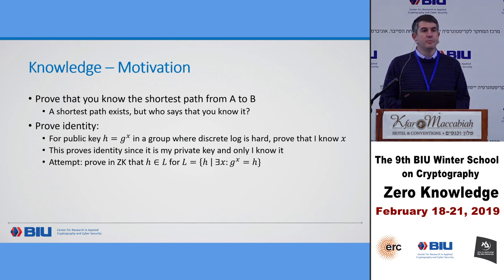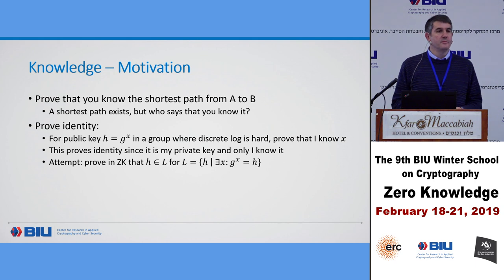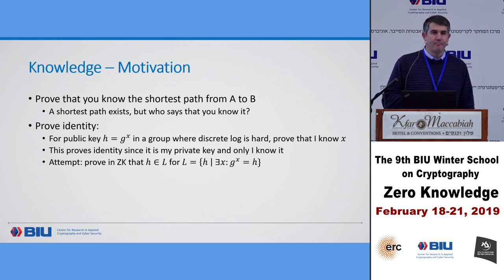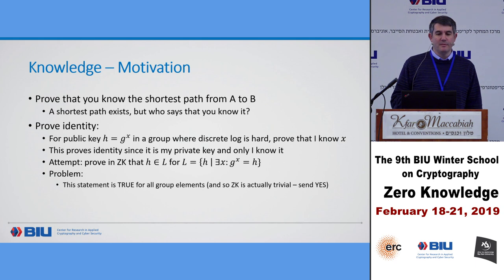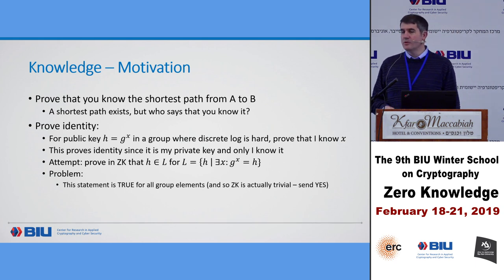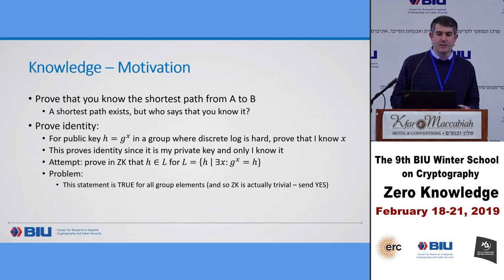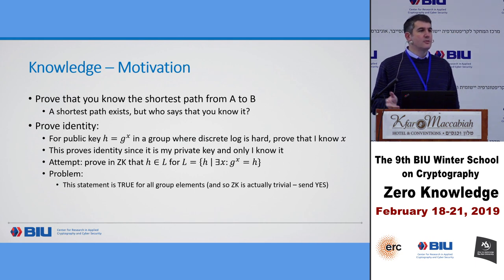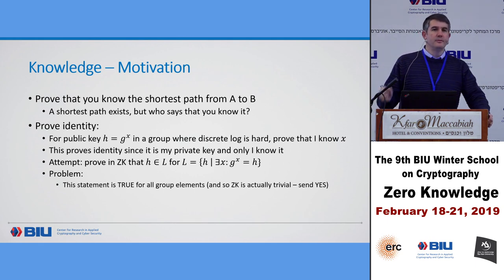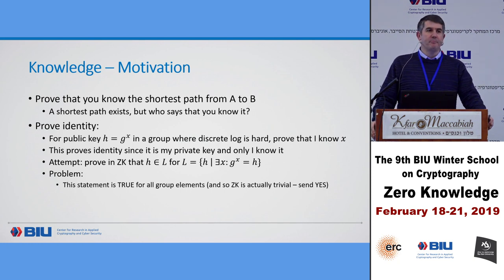I can obviously prove, using the proof from this morning, that h is in this language. But the problem is the same as before: this statement is true for all group elements, because g is a generator so there exists an x for any group element such that g to the x equals h. This is called trivial zero knowledge. I can prove this statement in zero knowledge by just sending you the string 'yes' — you just check that h is a group element.